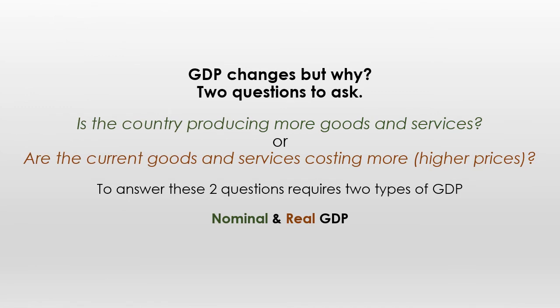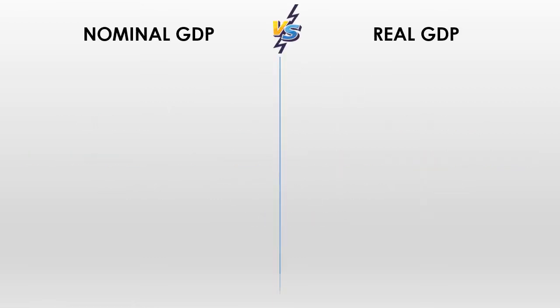We want to use GDP to help us make decisions. In order to make decisions about the economy, we need to know if GDP is going up because we are producing more goods or because goods are costing more. That means we really need two different ways to look at GDP: what we call nominal and real GDP.